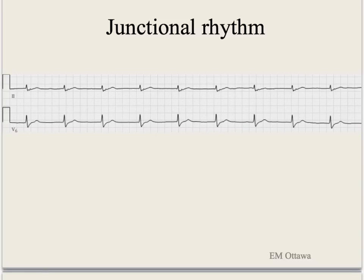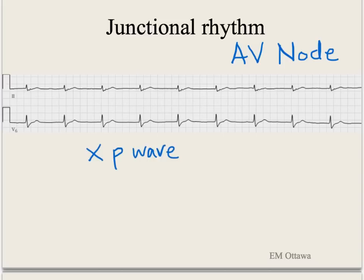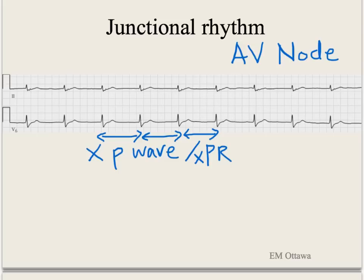This next rhythm is a junctional rhythm. Junctional rhythm originates in the AV node. Because of that, there will be no P wave, and hence you cannot look at a PR interval. Since there are no P waves, there is also no relationship between the P wave and the QRS complex. The RR intervals look regular, and for junctional rhythm the rate should be between 45 to 60. The QRS complex is narrow.